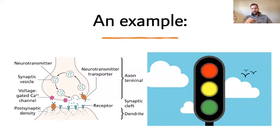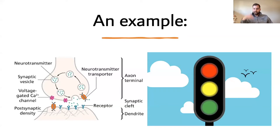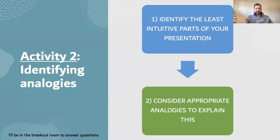I used this traffic analogy early on, and then I could just continue referring to them as red lights. But it's important to recognize I didn't just say 'there are red lights in the brain.' I explained what a synapse is and then said you can think about these like red lights — so you're not oversimplifying, but you're also not making it too complex.